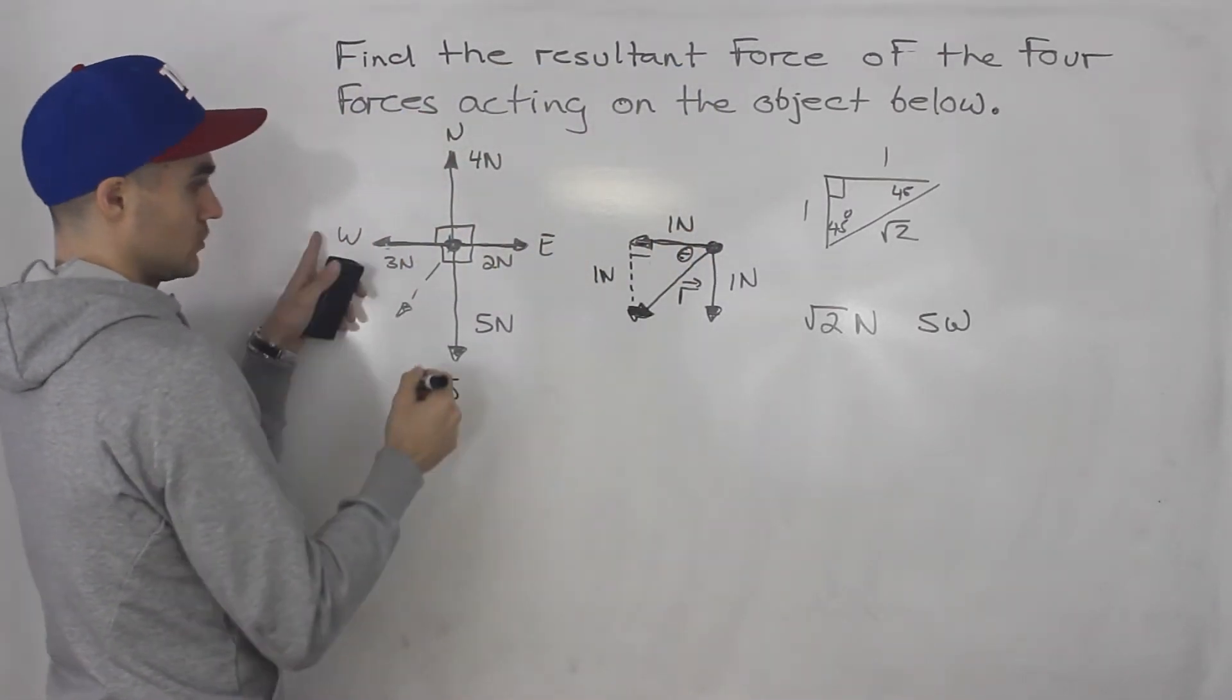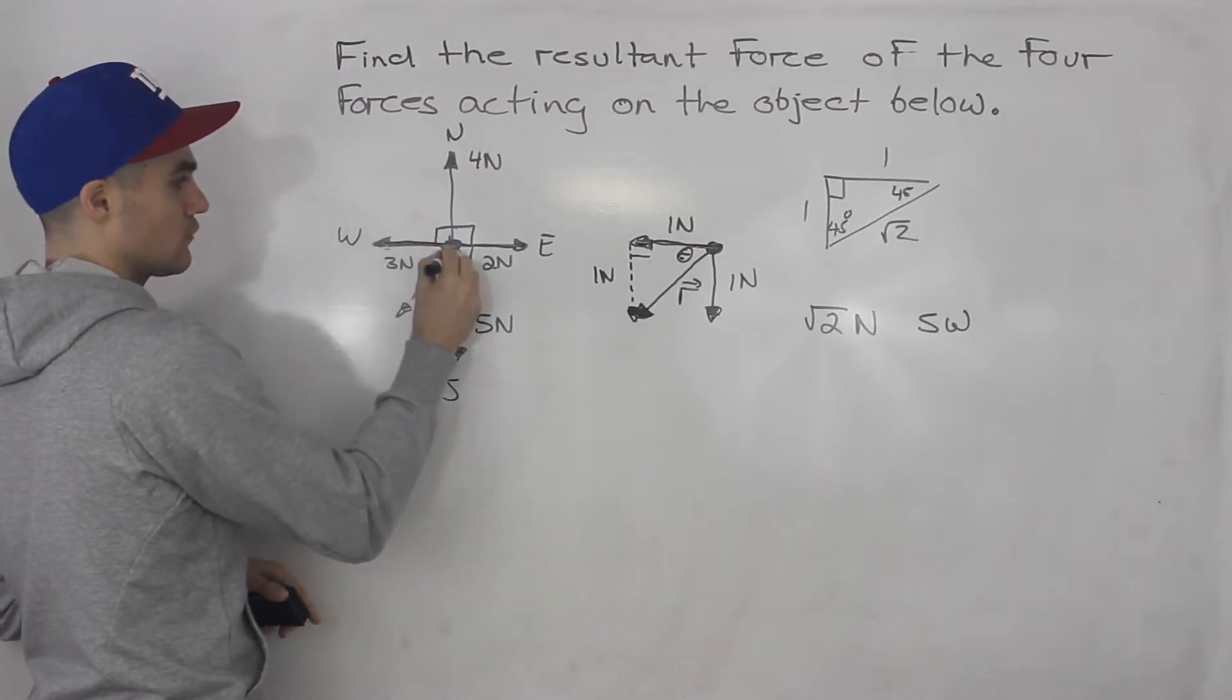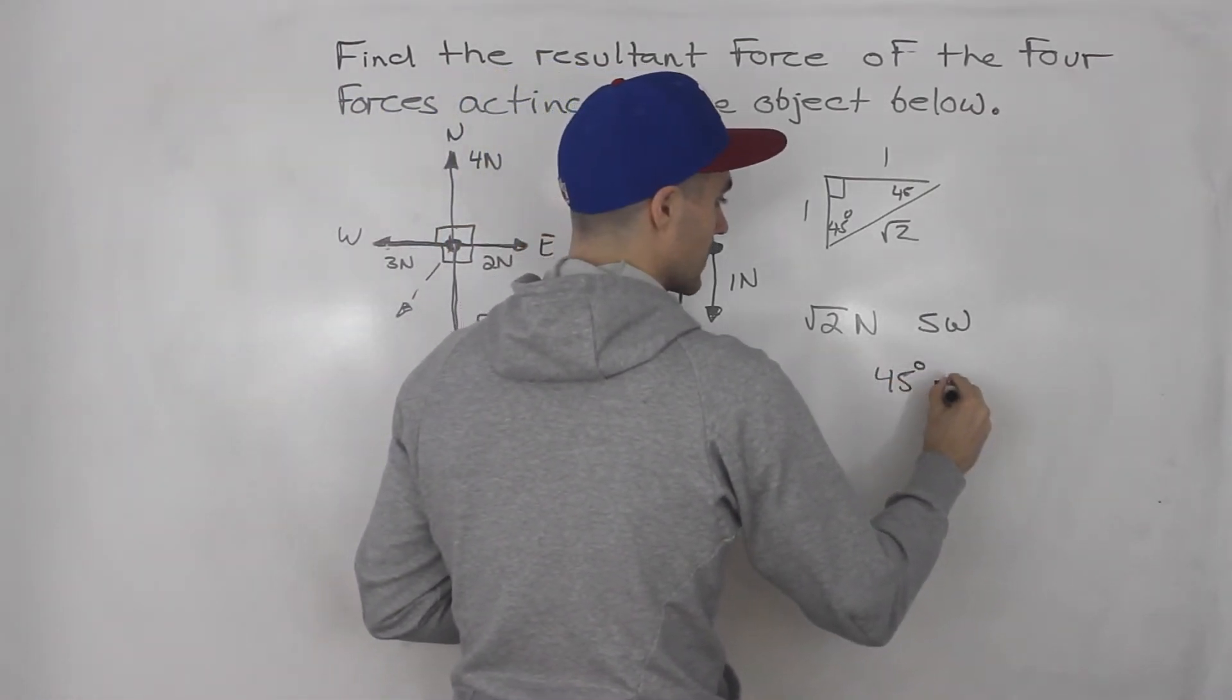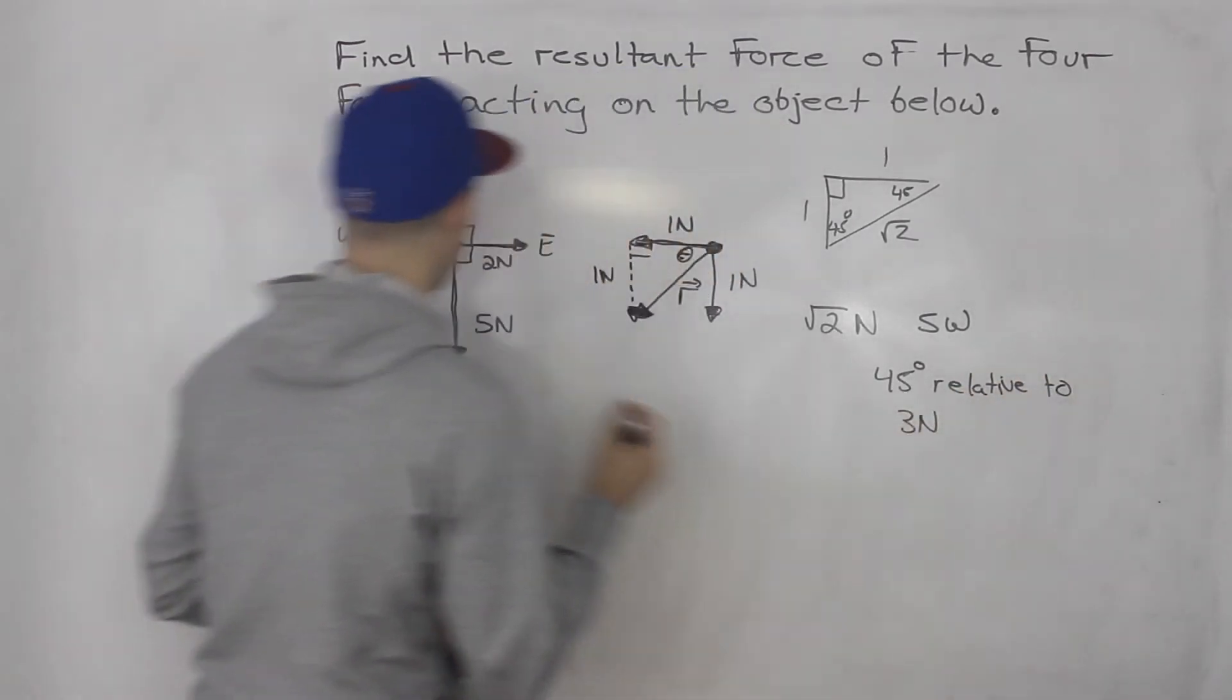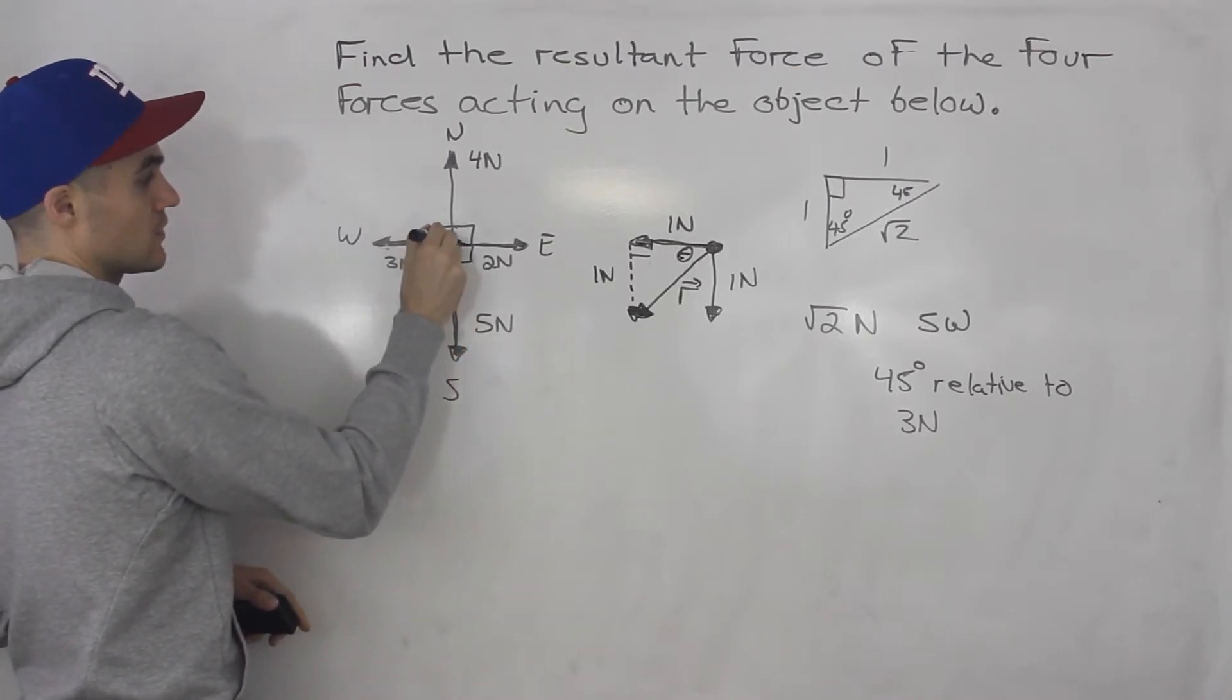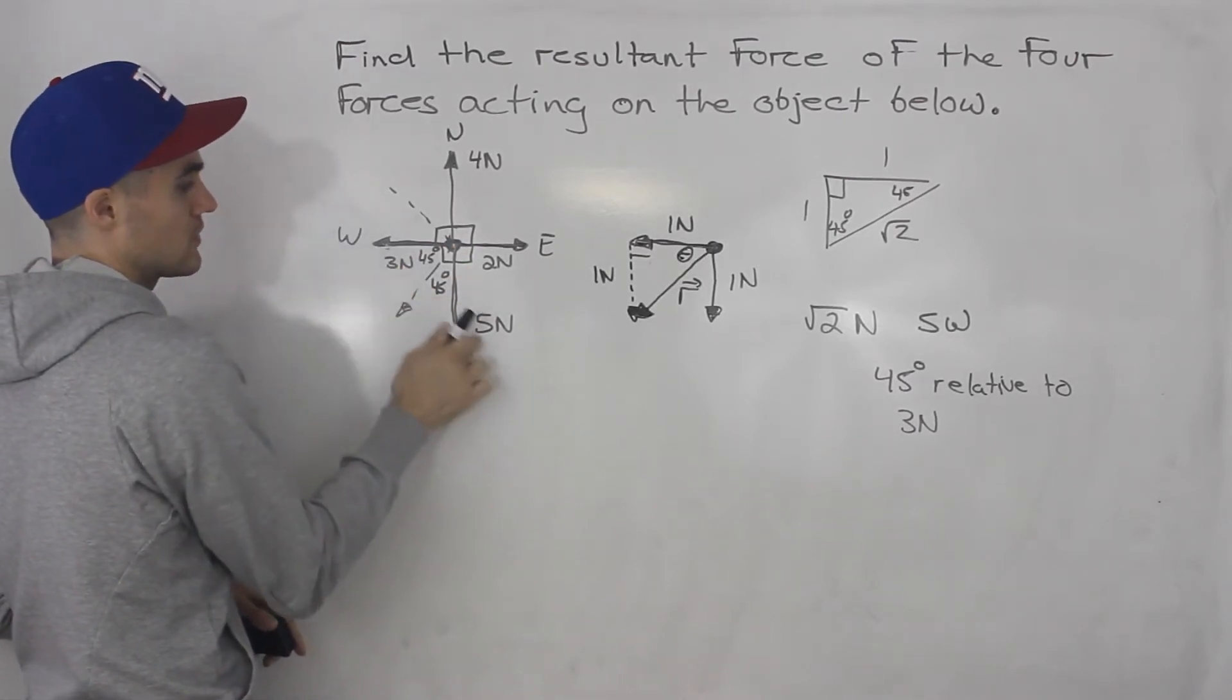If you don't want to include these directions, then we can say that the direction, we can make it relative to this three newton force and the five newton force. So we could say that this root two newtons is 45 degrees relative to three newtons. And also 45 degrees relative to five newtons. Because 45 degrees relative to three newtons can also be this way. So we've got to make sure that we state that it's this direction. So we've got to include this five newtons as well. It's in between three newtons and five newtons.